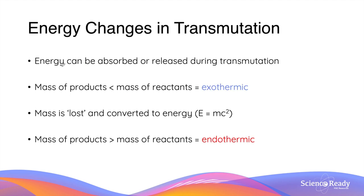All types of nuclear transmutation involve energy changes. Energy can either be absorbed or released during transmutation, depending on a few factors. The mass of reactants and products of a nuclear transmutation can be used to determine whether energy is absorbed or released. When the mass of the products is less than the mass of the reactants, the transmutation releases energy and is described as exothermic. This is because the mass difference between the reactant and the product has been converted into energy through the energy-mass equivalence principle, otherwise known as E = mc².